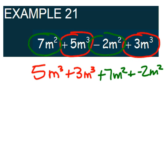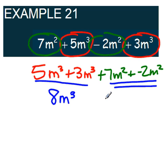Now that we have everything grouped together, we can go ahead and combine them. So the 5m to the third and 3m to the third will make 8m to the third. And the 7m squared plus negative 2m squared will make positive 5m squared.